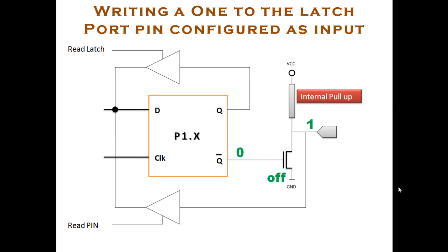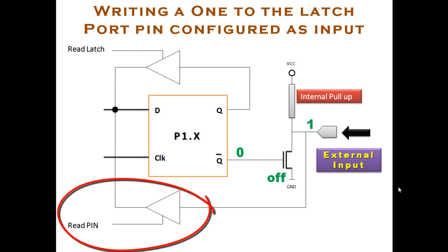When you write a 1 on this port, the Q bar will be 0, the transistor is off, and the output of the port is 1, pulled up by the internal pull-up resistance. But since the transistor is off, no path is provided to ground inside the circuit. Therefore, with the help of an external signal, you can easily pull down this value to 0. This 1 or 0 will go into the read pin tri-state buffer, which is driven by the read pin value, and you will get the pin value on the internal CPU bus.